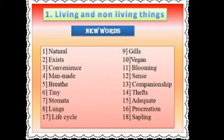Next is adequate. Adequate means satisfactory. Sixteenth one: procreation — procreation means to generate or reproduce. Seventeenth one: life cycle. Life cycle means the time from birth to death. Next one: sapling — sapling means a small plant.